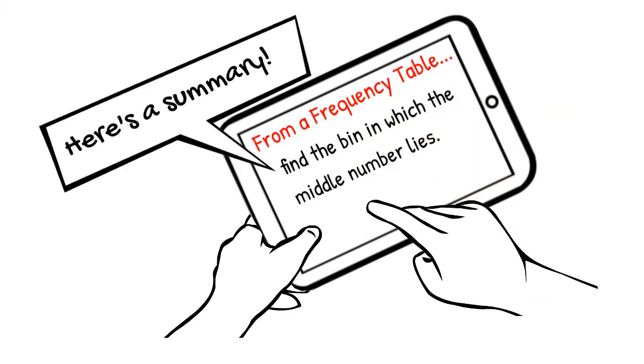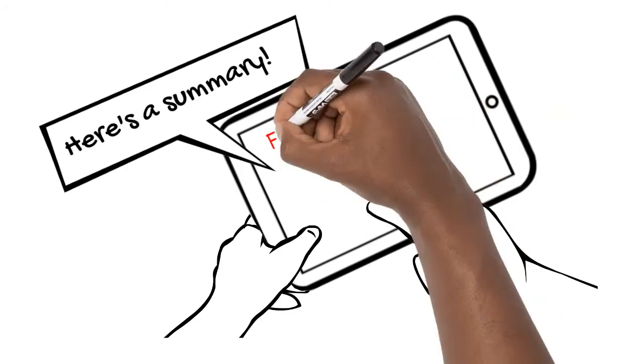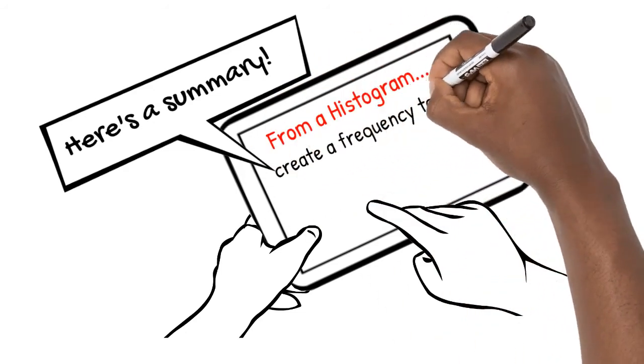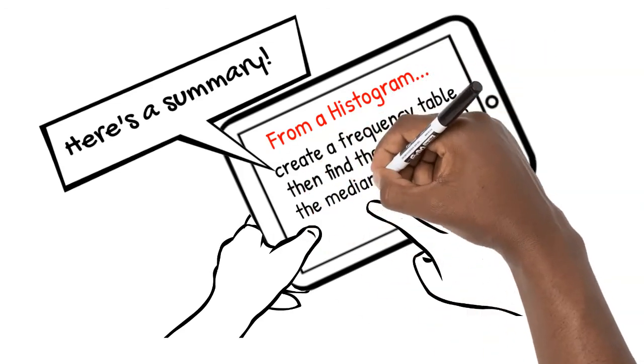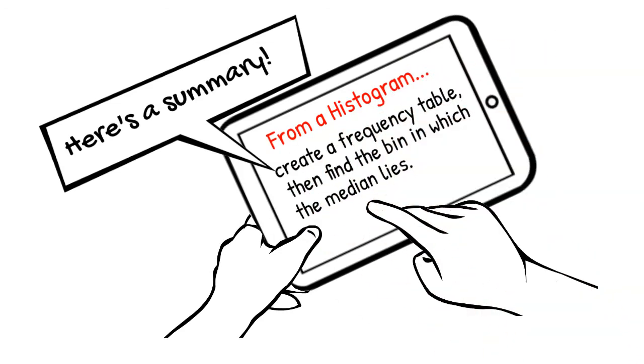From a frequency table, we find the bin in which the median lies. From a histogram, we create a frequency table and find the bin in which the median lies.